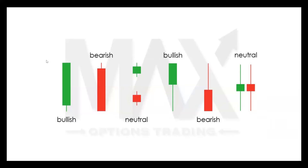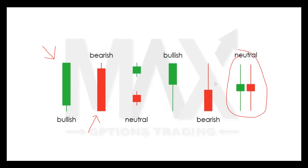Here are some examples: a bullish candle where we saw no selling action, a bearish candle with no buying action, neutral candles where no one really won, a bullish candle with a long wick where the bears got kicked out, and a neutral candle which we'll discuss further — that's the doji.